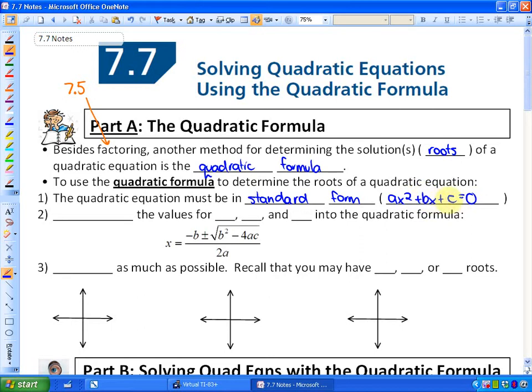The second step is to substitute the values for a, b, and c into the quadratic formula. The quadratic formula, which I am putting a green box around, is x equals negative b plus or minus the square root of b squared minus 4ac, all over 2a.